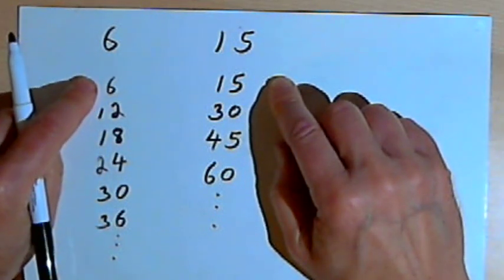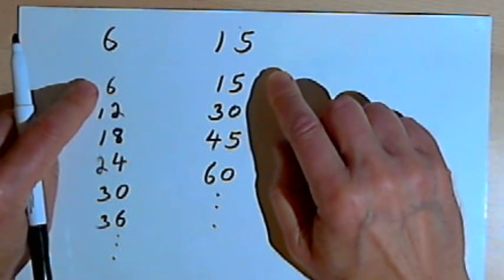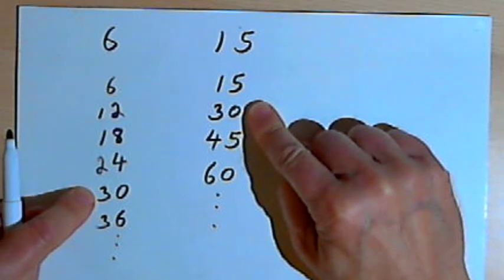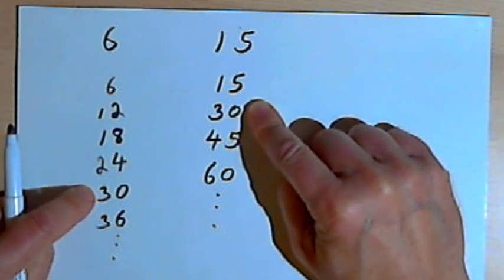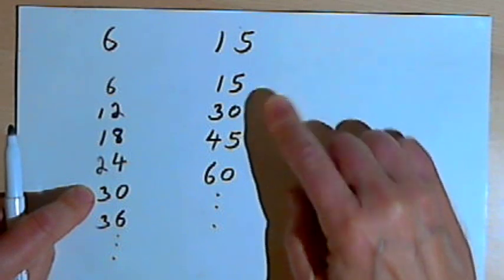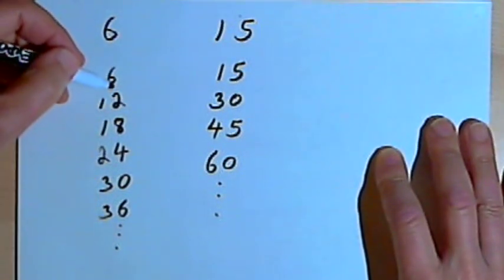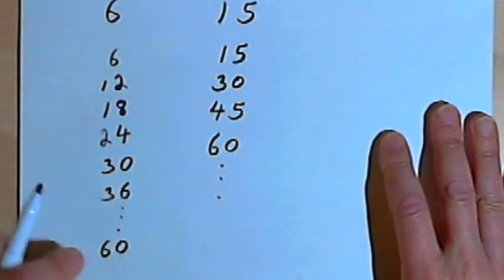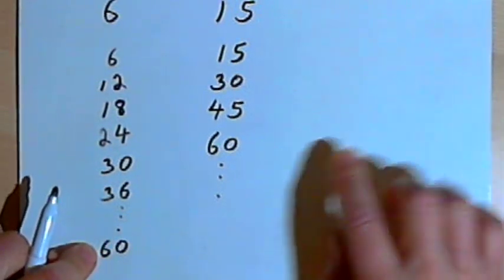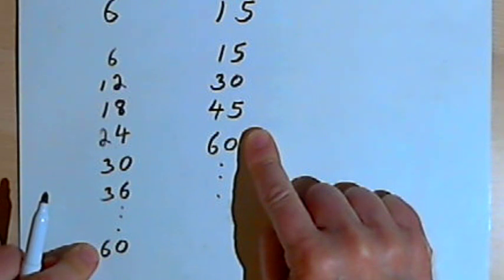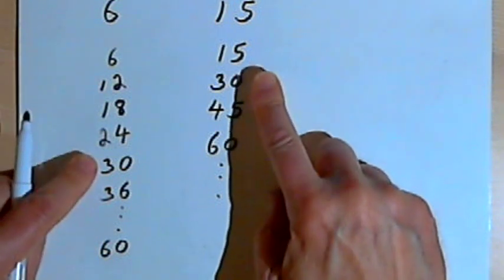Now if I'm looking for a common multiple, it means I'm looking for a multiple that's in both of my lists. And both of my lists have 30 in them. There's no other multiple in the list so far, so it looks like that would be the smallest common multiple — it would be the least common multiple. Now notice if I continued my list, especially the one for the 6, if I got down to 10 times 6 then I would have had a 60. So 60 is a multiple of 6 and 60 is also on my list for the 15. But it's not the smallest multiple that I have in common — it's not the least multiple. That would be the 30.